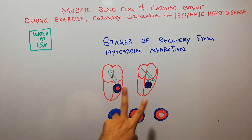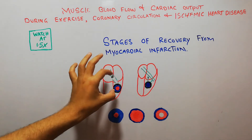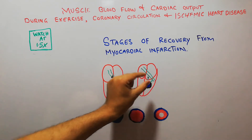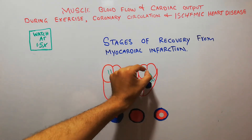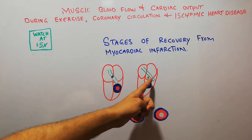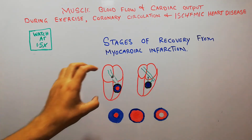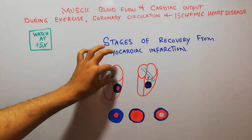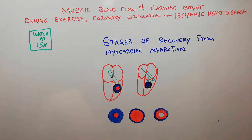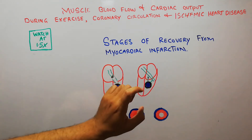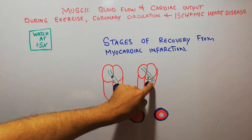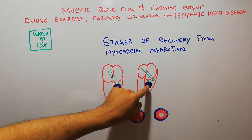We have two scenarios. In the first scenario there is a small occlusion, in which blood flow to a small area is reduced — a small branch of the main coronary vessel is blocked but there is still some blood coming to the damaged area. In the second scenario there is complete occlusion of the blood vessel, with no blood coming to that area at all.